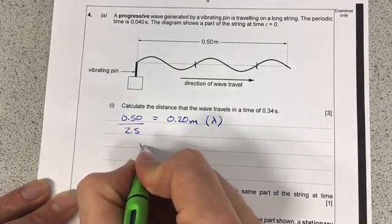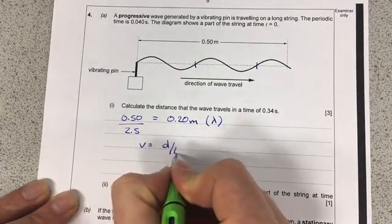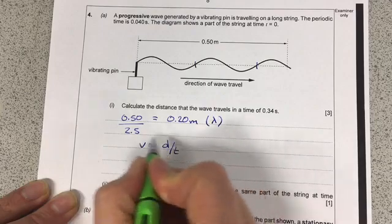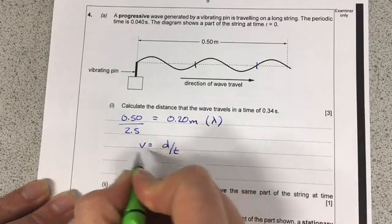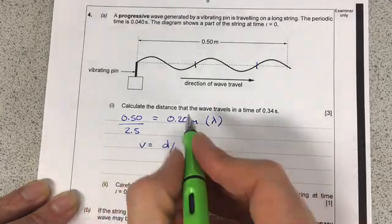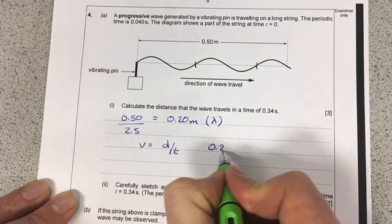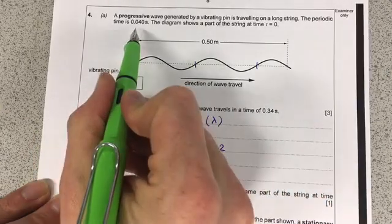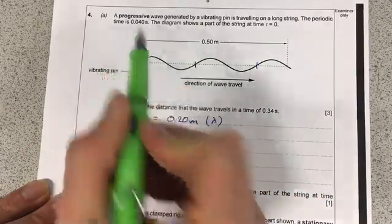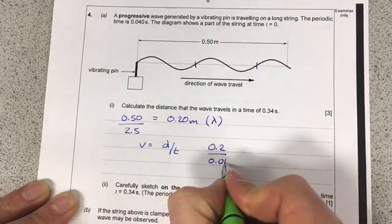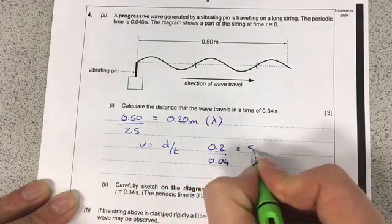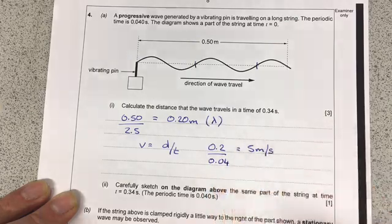I can do velocity equals distance over time to find how fast the wave is travelling, because I now know the distance of 0.2, that's this one here, and up here in the question, it tells me the amount of time one wave takes to happen, so that's 0.04, and that's equal to 5 metres per second.